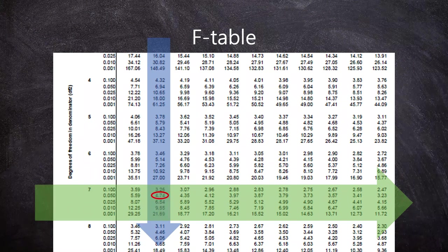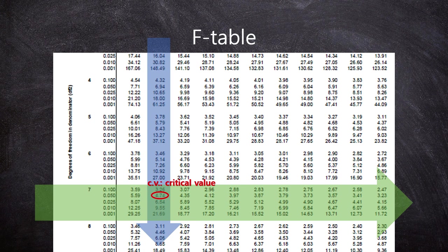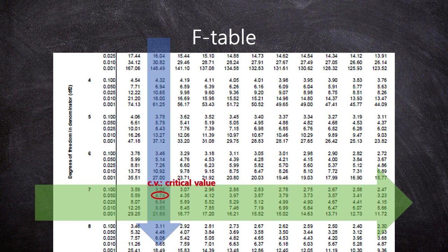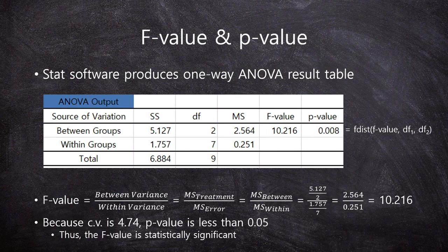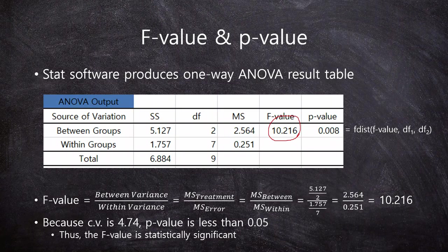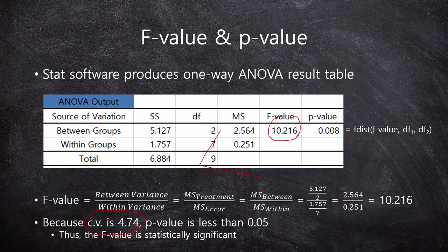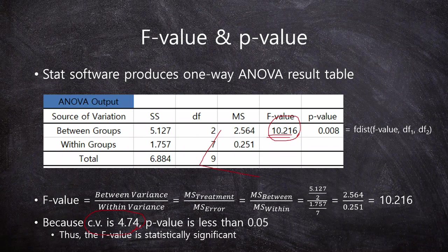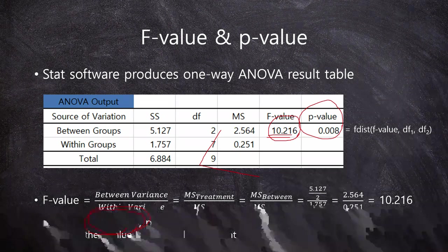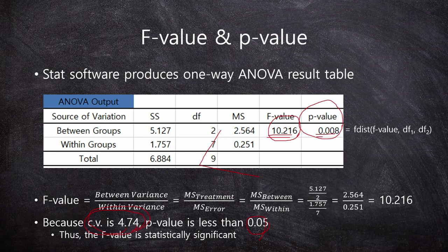But what is this? This number is the critical value. It's the same as in the T-table. There are so many p-values, so this table cannot show us the p-value. Instead of the p-value, the T-table and F-tables just give us the critical value for 5%. Let's check our result. In this case, our F-value is 10.216 and the critical value is 4.74. Our F-value is much larger than the critical value. It means that our p-value is also much, much smaller than 5%.